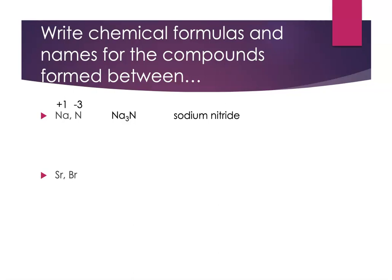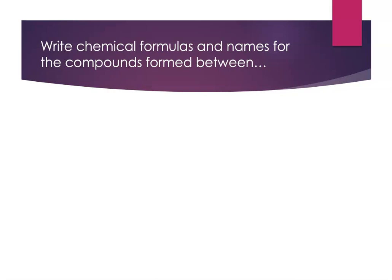Strontium reacting with bromine: strontium is a group 2 element with a typical +2 charge. Bromine forms a monatomic −1 bromide ion. We need two bromide ions to counteract the +2 charge from strontium. The formula is SrBr₂, and the name is strontium bromide. This is very doable — keep practicing, and get extra help if it's not clicking for you.